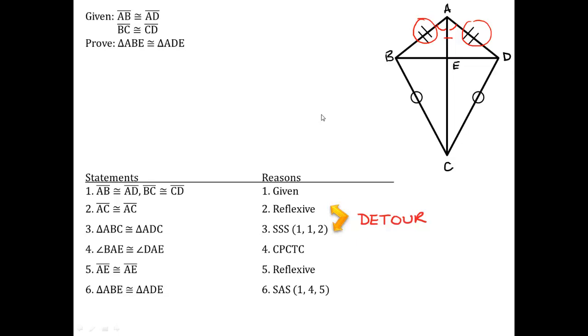So that's an example of when you have to use a detour where you prove some other triangles congruent first and use that information to help you prove another set or another pair of triangles congruent. It sounds confusing, but it's really not anything new, it just requires a little bit more thought.